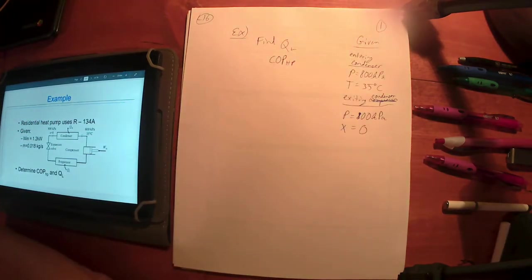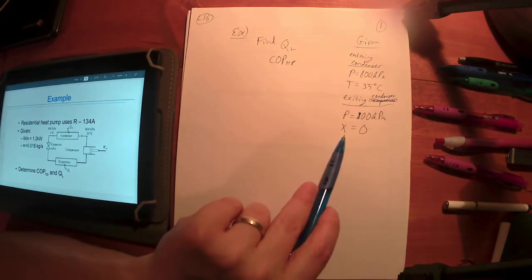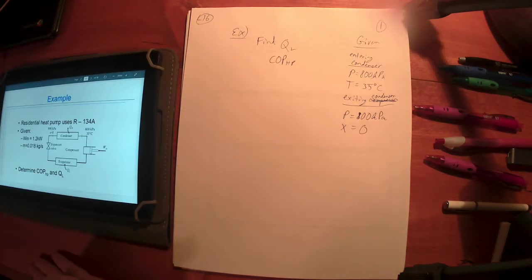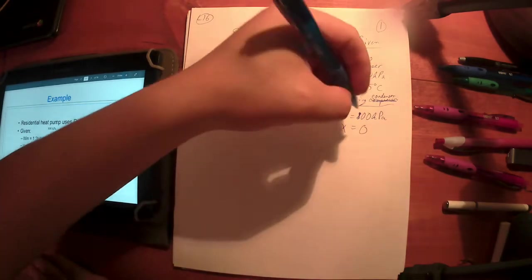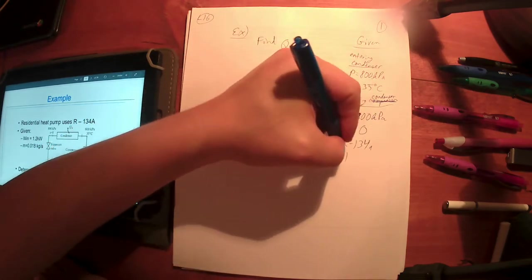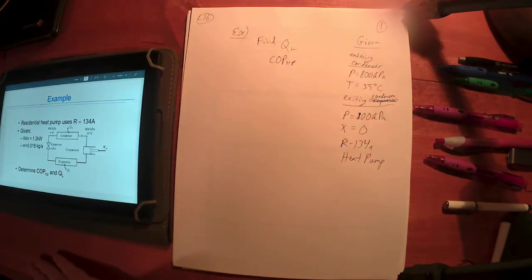The problem would tell us it's exiting at 800 kilopascals and that it's exiting as saturated liquid. You can write that out as saturated liquid. I like to use the quality, the x value, whenever we're referring to something that's saturated. x of zero means it's saturated and zero percent in the vapor phase. x represents how much is in the vapor phase only if it's saturated. It means nothing for superheated vapor or compressed liquids.